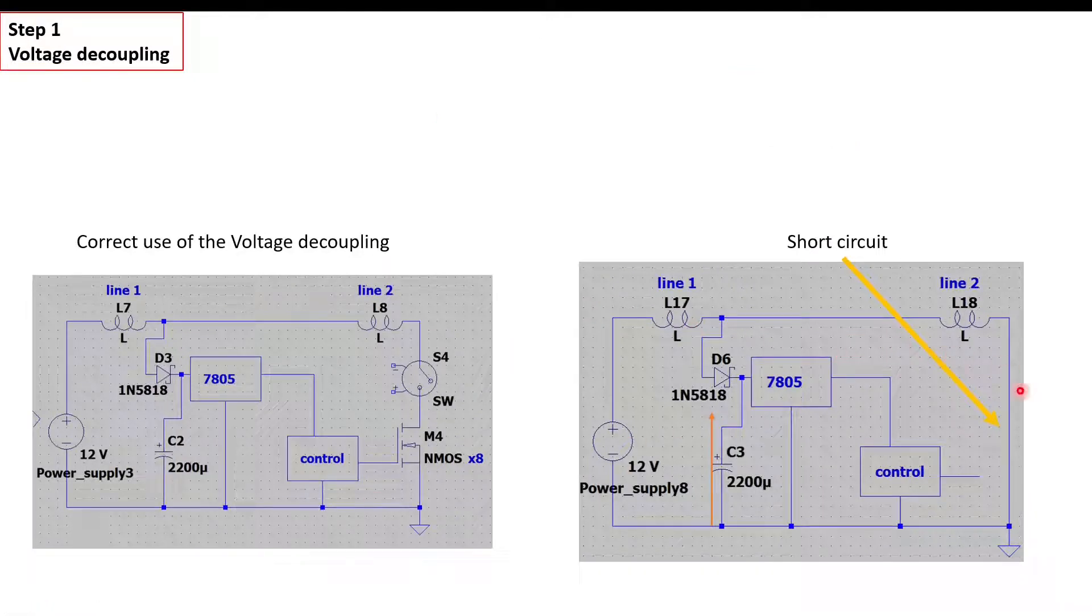You can see the short circuit when you solder the nickel strip. The diode prevents the capacitor from being discharged in this line along this line.